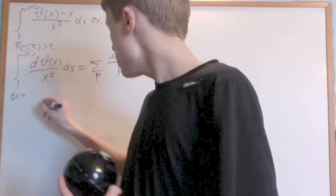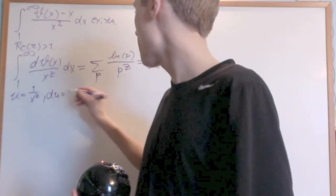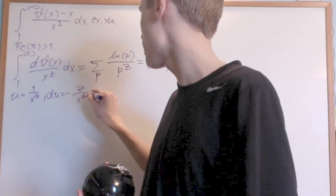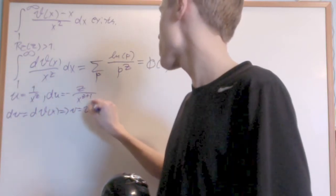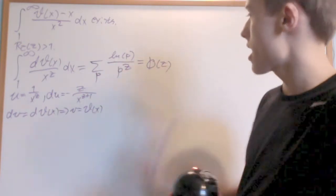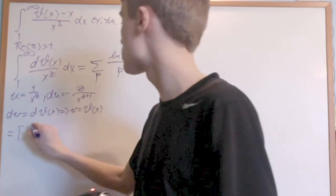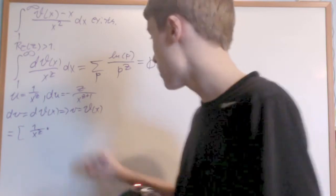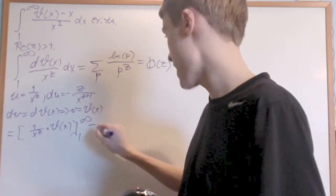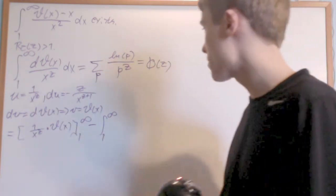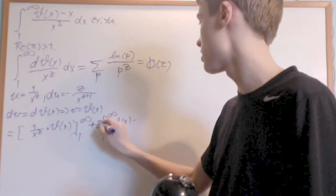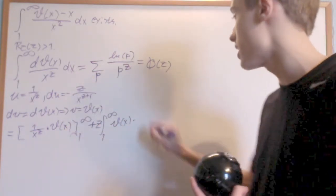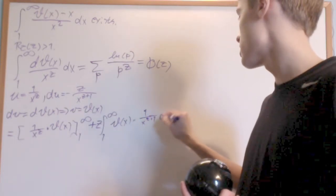Let u equal 1 over x to the z, so that du is minus z over x to the z plus 1. And dv equals d theta of x, so that v is just theta of x. Out the other side we get u times v, which is 1 over x to the z times theta of x, evaluated from 1 to infinity, minus the integral from 1 to infinity of v times du, which is minus z times 1 over x to the z plus 1 dx.